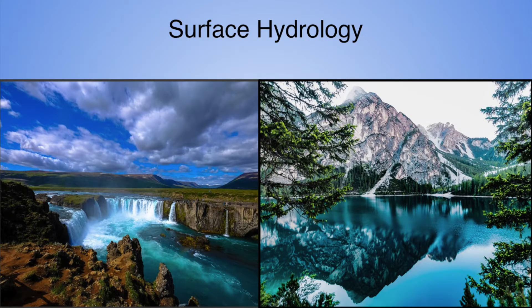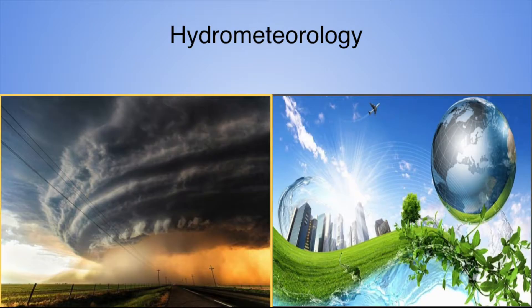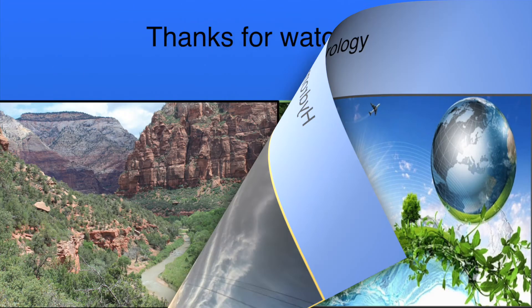Surface hydrology includes studying rivers, lakes, snowfall, and other water processes at the surface of the earth. Hydrometeorology is the study of how water and energy are transferred between water bodies, land, and atmosphere.